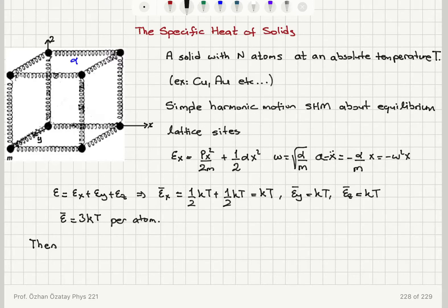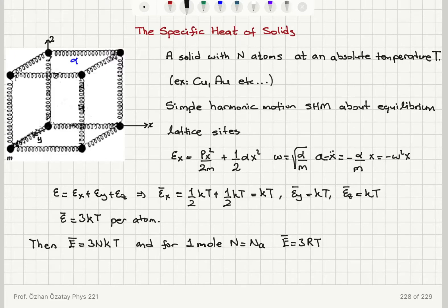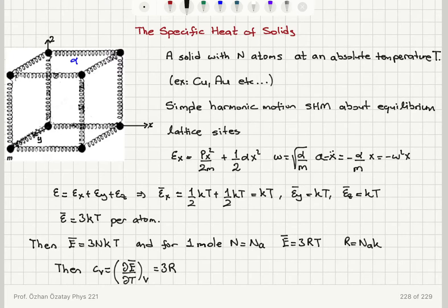For capital N atoms, the total mean energy equals 3NkT. For one mole, the number of atoms is Avogadro's number, so the total mean energy equals 3RT, where R is Avogadro's number times Boltzmann's constant. We can then calculate the molar specific heat at constant volume: it is d-E-bar over dT at constant volume, which equals 3R. Since R is about 8.31 joules per mole kelvin, the cv value will be around 25 joules per mole kelvin.